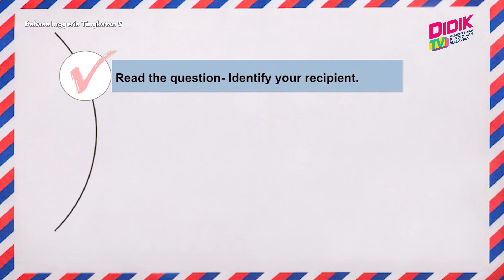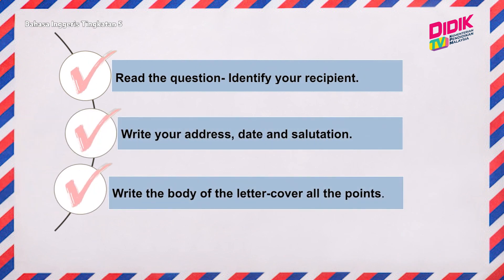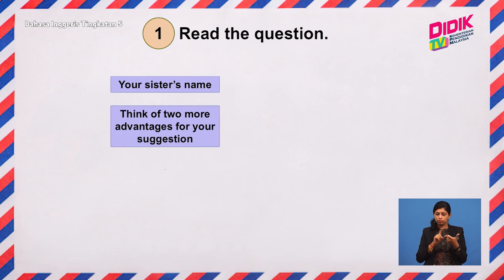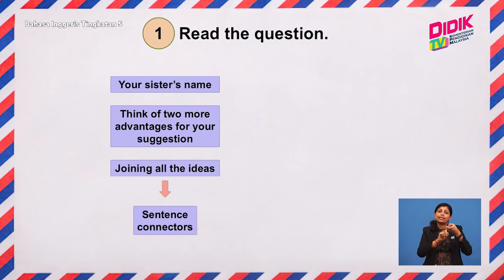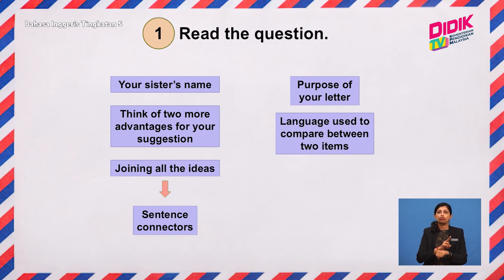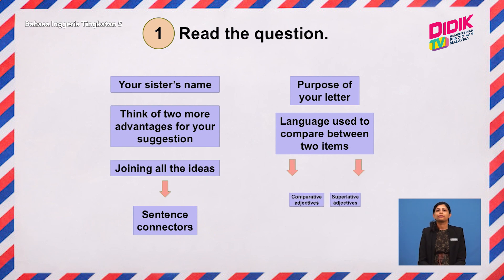Let's look at the first three steps. When reading the question, here are the things you need to quickly jot down — time flies really quickly in the exam room. Think of a name, write two advantages that you would use later, write some of the connectors you plan to use, always remember the purpose of your letter, and think of the language used to compare items — we are looking at comparative and superlative adjectives.